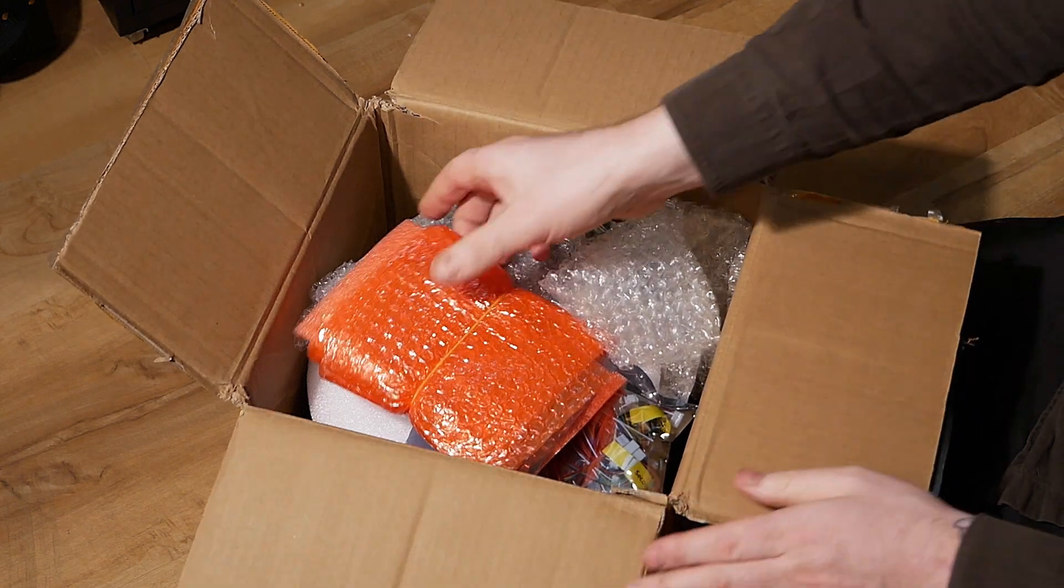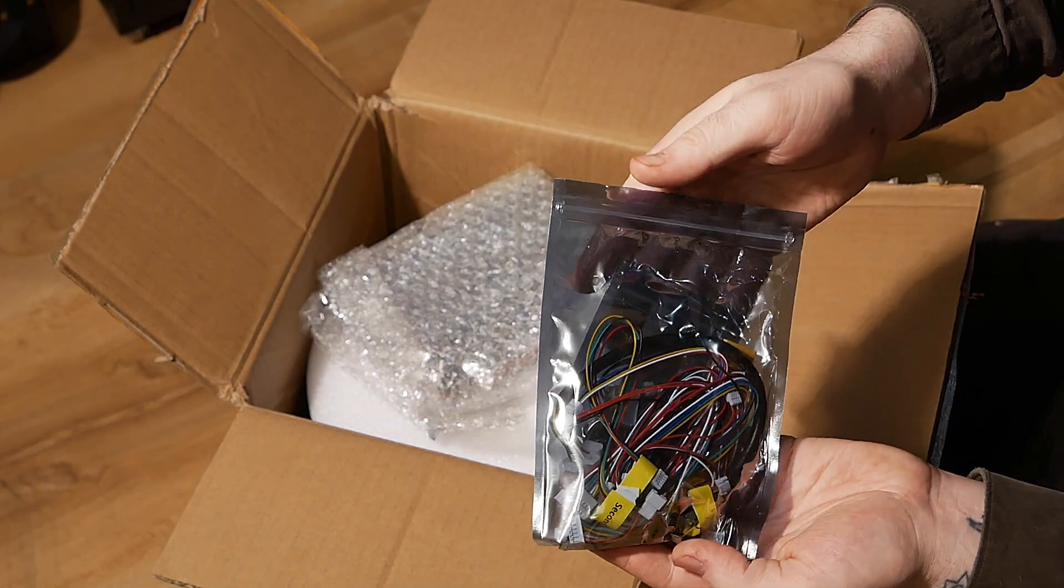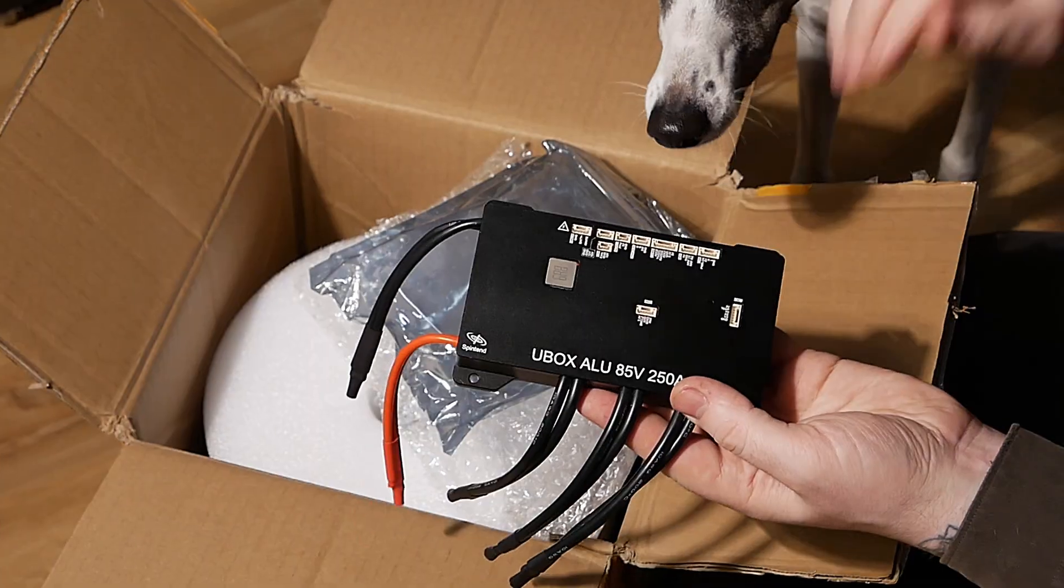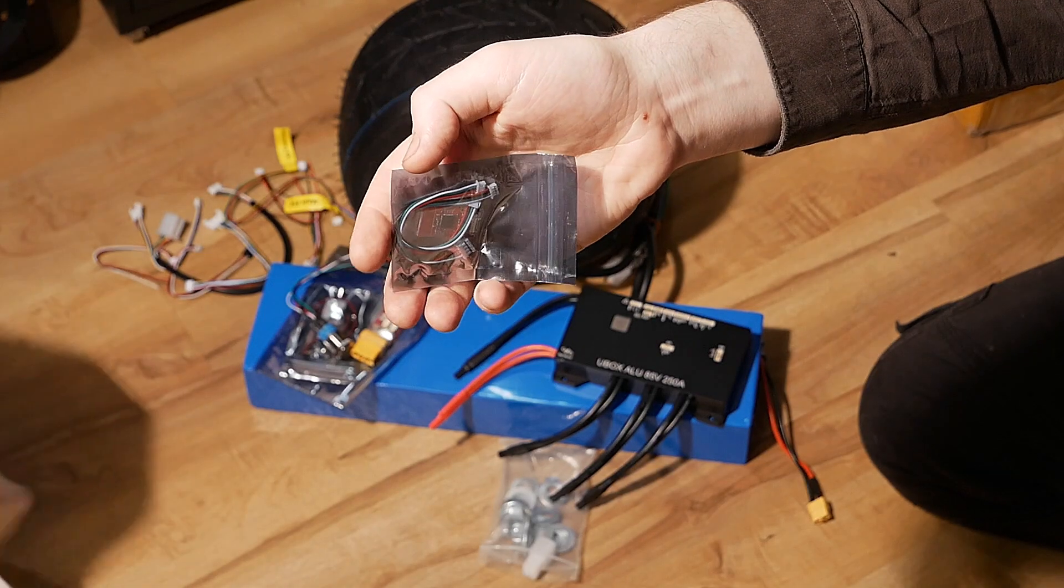The footpad sensor, the main fuse, many of the necessary cables, the power switch, the motor controller and the 4kW motor along with the tire. All of this was delivered in this box from Spintend.